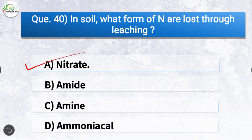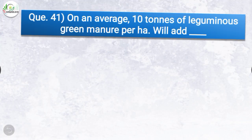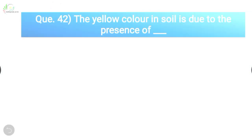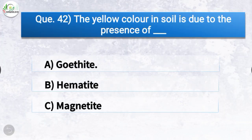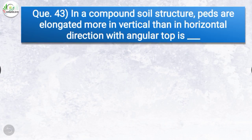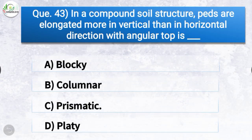Question number forty-one: on average, 10 tons of leguminous green manure per hectare will add? The correct answer is option A, 35 kilograms of nitrogen. Question number forty-two: the yellow color in soil is due to the presence of? The correct answer is option A, goethite. Question number forty-three: in a compound soil structure, beds elongated more in vertical than horizontal direction with angular tops — the correct answer is option C, prismatic.